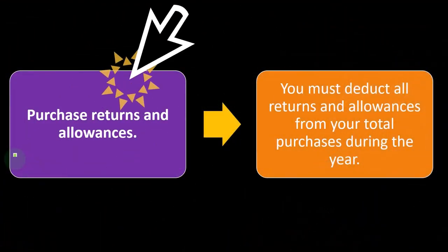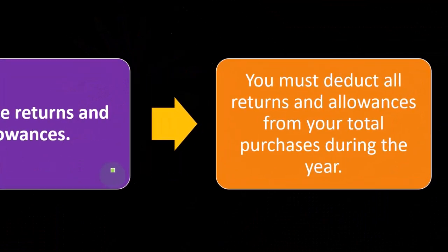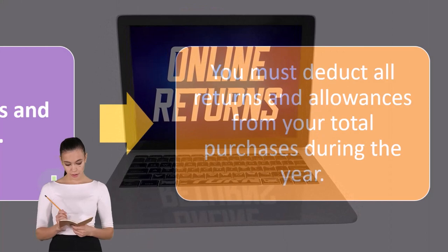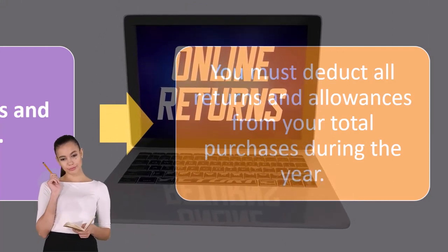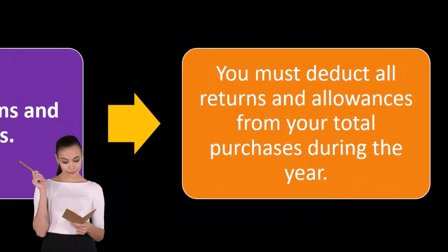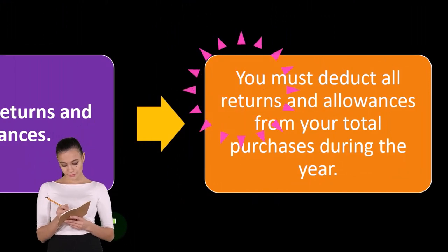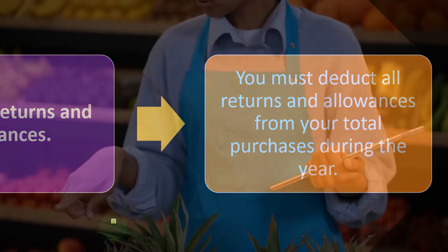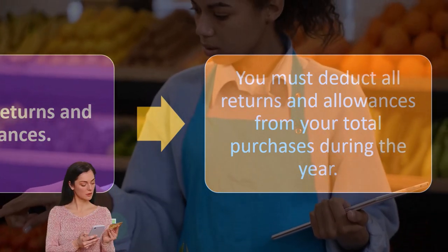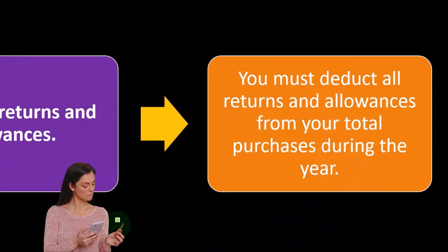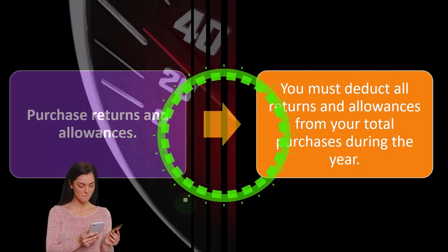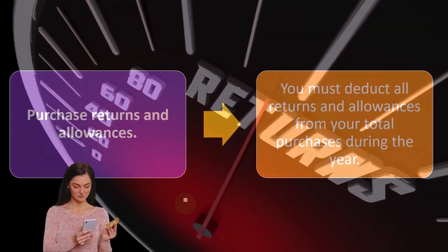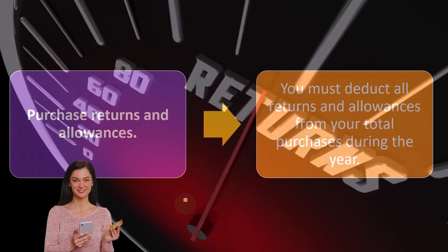Purchase returns and allowances: you must deduct all returns and allowances from your total purchases during the year. This refers not to returns coming from customers who bought your inventory, but rather to inventory that you rejected and are returning to your vendors. Because you returned those items, you must deduct all returns and allowances from your total purchases during the year.